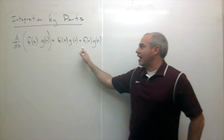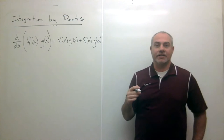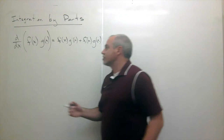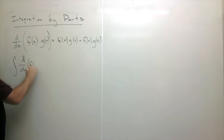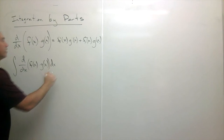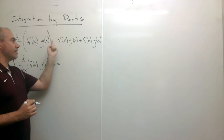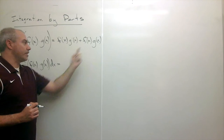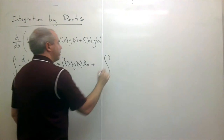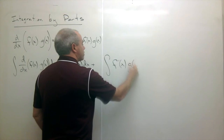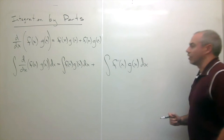Since both sides of the product rule are equal, if I take the antiderivative of both sides, they remain equal. So the integral of d/dx of [f(x) times g(x)] dx equals the integral of f(x) times g'(x) dx plus the integral of f'(x) times g(x) dx. All I've done is take the antiderivative of both sides of the product rule equation.